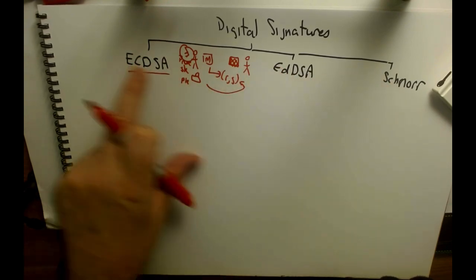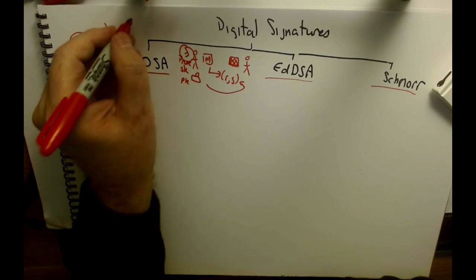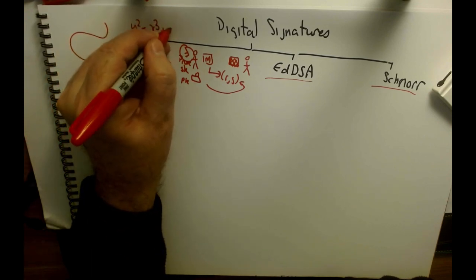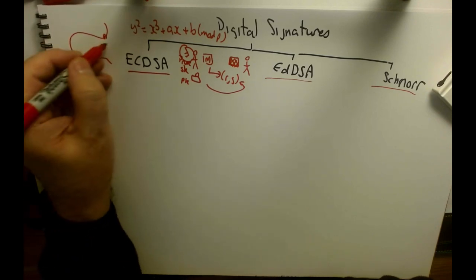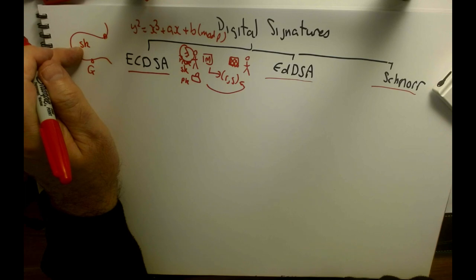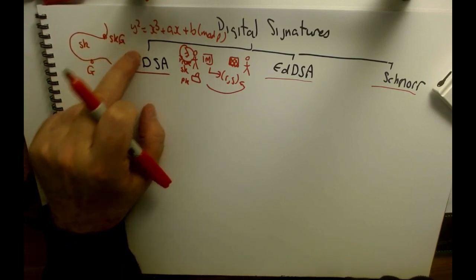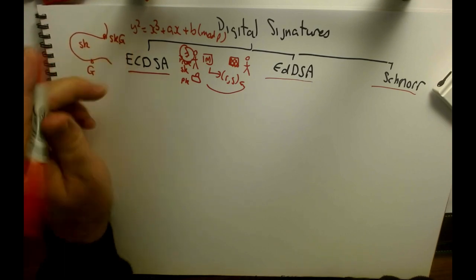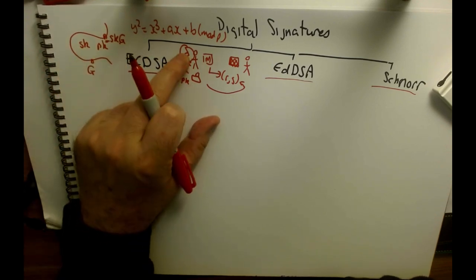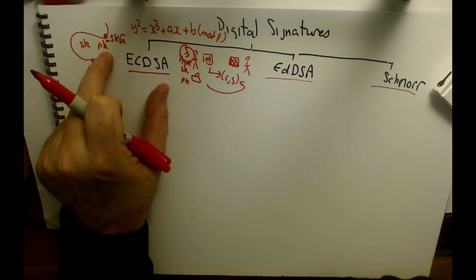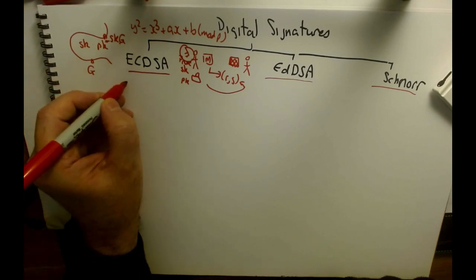Each of these methods is an elliptic curve method because it's much more efficient than using discrete logs. With elliptic curve methods we have a base point on the curve. We generate a private key sk — typically a 256-bit value — and create a point sk·G, which is G added sk times. This becomes the public key, while sk is the private key. Alice keeps the scalar value secret but can release the point value.